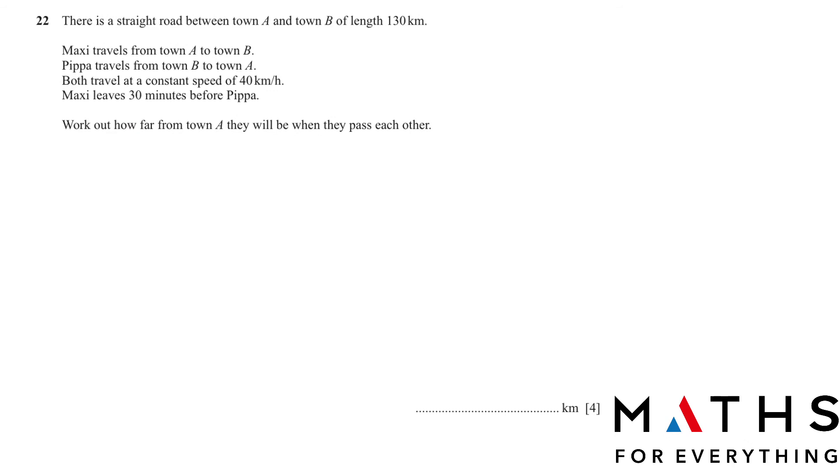The first thing is that there's a straight road A and B. This is town A and town B. The distance between both of them is 130 kilometers. We know that our distance from town A to B is 130 kilometers. Then Maxi travels from town A to town B, and Pippa travels from town B to town A. Both are traveling at a constant speed of 40 kilometers per hour.